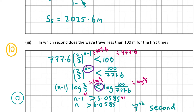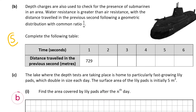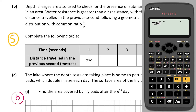Part b is worth 5 marks. Depth charges are also used to check for submarines. Water resistance is greater than air resistance, with the distance traveled in the previous second following a geometric sequence with common ratio 1/9. We complete the table by multiplying each term by 1/9: starting values give us 81, then 9, then 1, then 1/9, and finally 1/81.